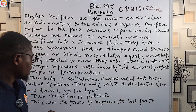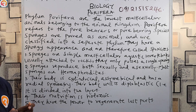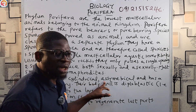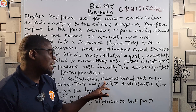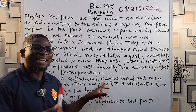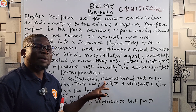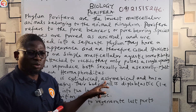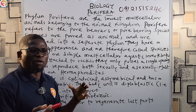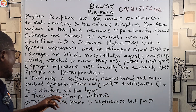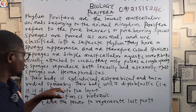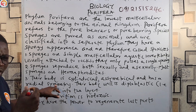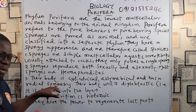Their body is cylindrical. They are asymmetrical — meaning they lack symmetry; their body parts fail to correspond to a particular shape, form, or structure. They also have radial symmetry, as discussed in the previous episode, so please go back and watch that episode.